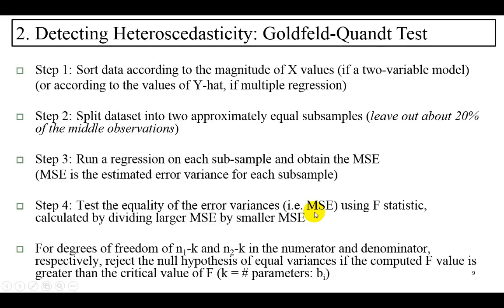...meaning if we have homoscedasticity in that the variation of Y is the same for the two subsamples, then this F statistic is going to be close to one.